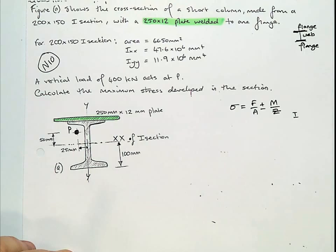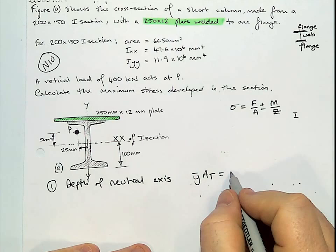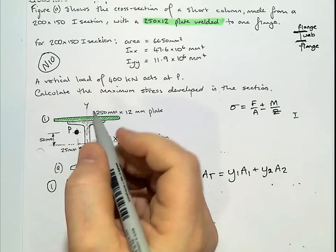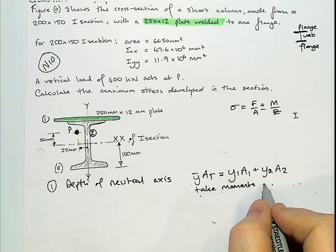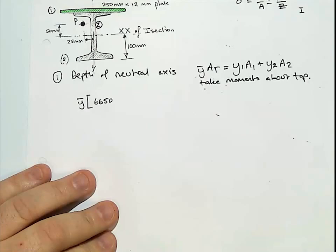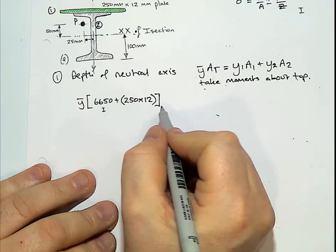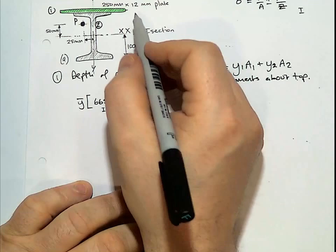So one depth of neutral axis. From the formula sheet on the back, we'll class the plate as one, and the section as two. And we'll take moments around the top. What we're trying to find out, Y bar, times pi. Now, from the table, for our I section, our area is 6650. That's for the I. And then we plus the plate on the top, which is 250 times by 12.